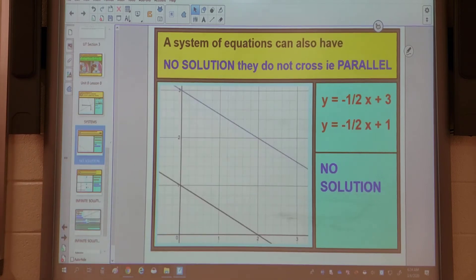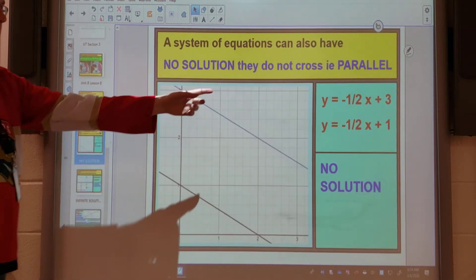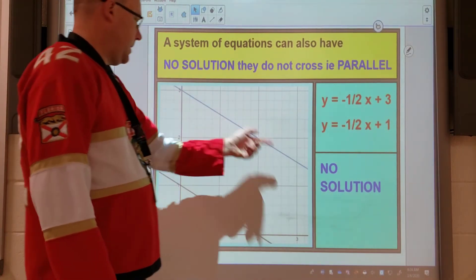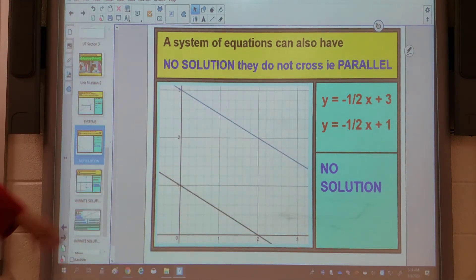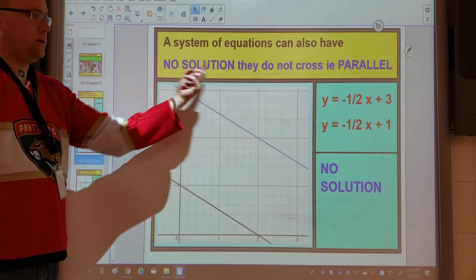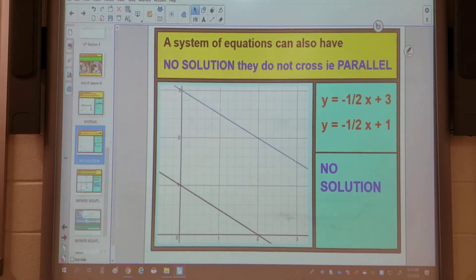Now there are a couple of special cases as well. For example if you type these two graphs in you actually get a pair of parallel lines and these do not cross. So the question I always ask is do they cross? No. Therefore the answer must be no solution. So keep an eye out for that as well.